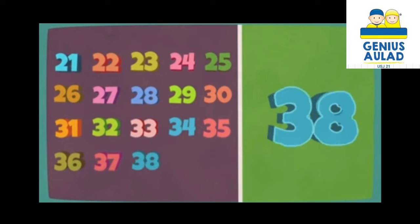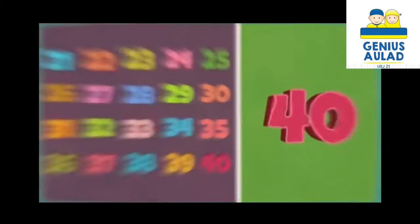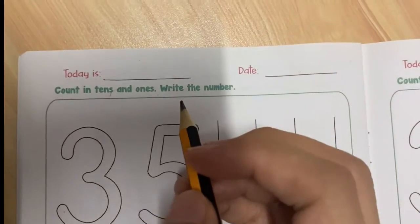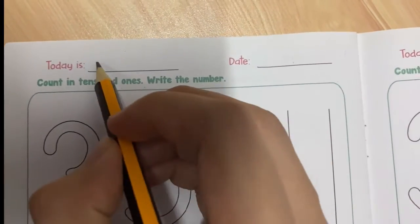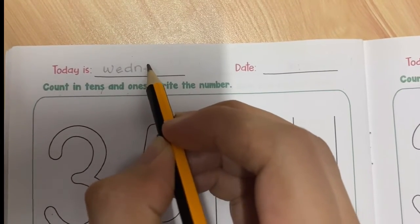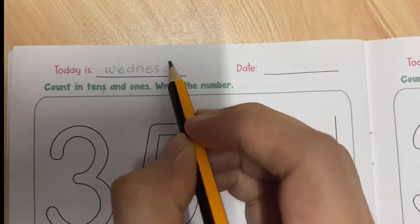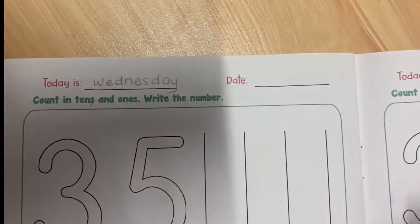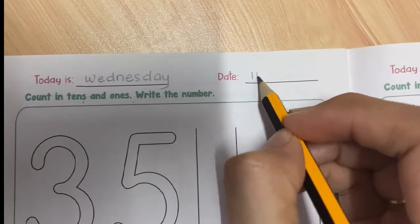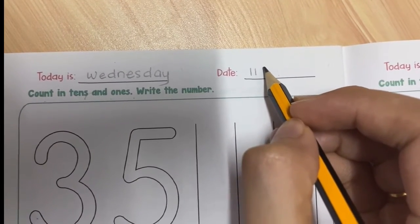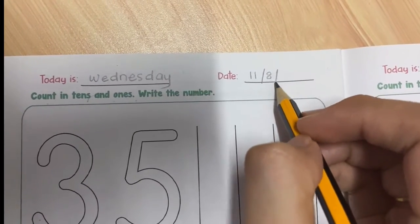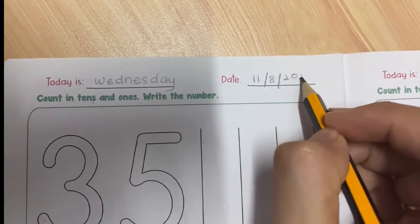Children, don't forget to write your day and date. Okay, what day is today? Today is Wednesday: W-E-D-N-E-S-D-A-Y. The date is 11/8/2021.